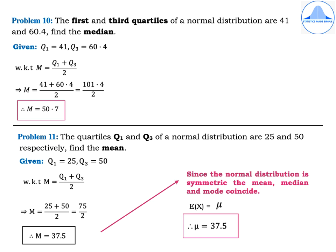Using M = (Q1 + Q3) / 2 = (25 + 50) / 2 = 75 / 2, so median M = 37.5. Since the normal distribution is symmetric, the mean, median and mode coincide. Therefore E(X) = mu = 37.5.